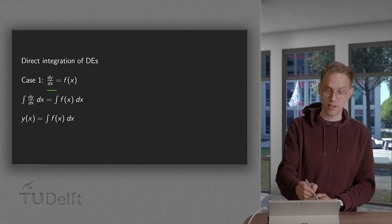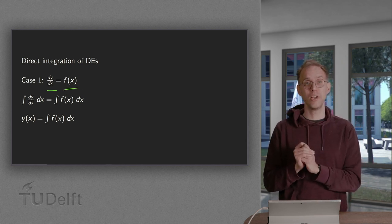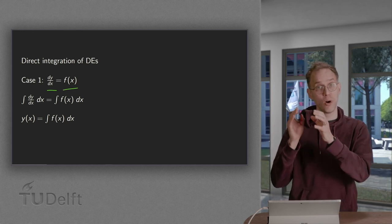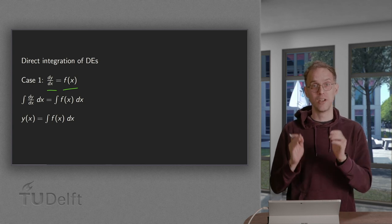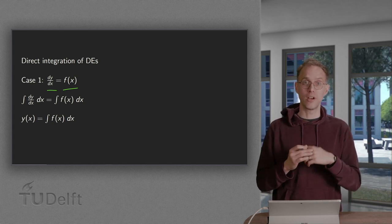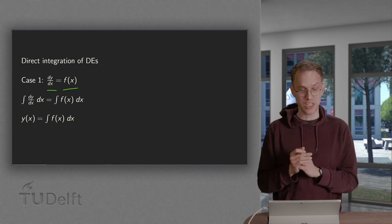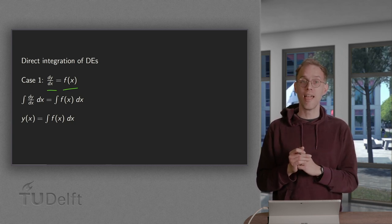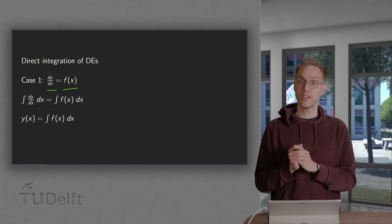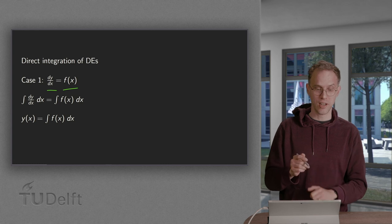The dy/dx can be a function of x on the right-hand side only, or dy/dx can be a function only of y on the right-hand side. Those two cases are the ones we will look into now. How are we going to solve the case where dy/dx only depends on x on the right-hand side?